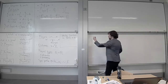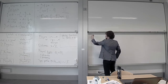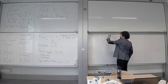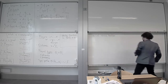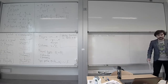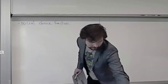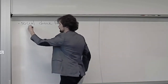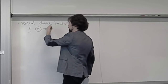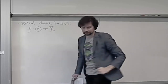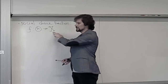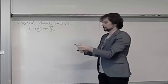Moving on, another definition we need is a social choice function. A social choice function is a function f that maps type profiles into outcomes. It tells us: if all players have this type profile, what is the outcome that we should implement? This is something that we want to achieve.